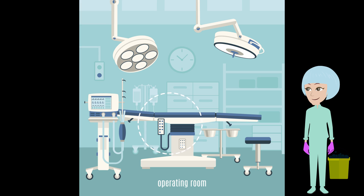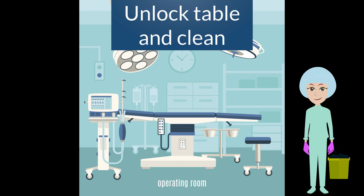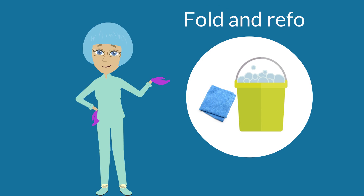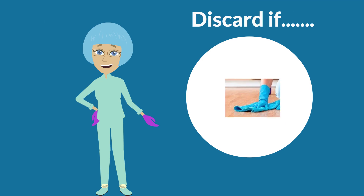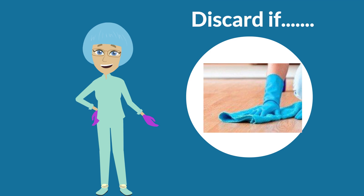Disassemble the operative table and clean and disinfect all surfaces including the remote control. Unlock the table and move it when cleaning, as blood and debris can get underneath it. Once finished, return it to the proper location and re-lock the wheels. Fold and refold the cleaning cloth when disinfecting and change it often during the process. Discard it if it touches the floor or is used to clean items such as wheels or casters.